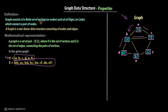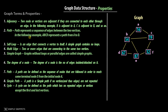Let's move forward and go through some important properties of graph data structure. On the left hand side we have quite a lot of data. You can take a screenshot or make notes. These are important graph terms and properties — adjacency, path, self loop, etc. — so don't skip this. You need to have heard about all these terms so that later on, when we use them in the actual implementation, you don't get confused.